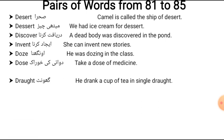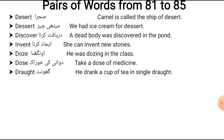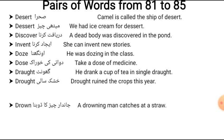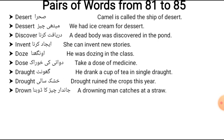Next pair: 'draught' and 'drought.' Draught means a gulp or sip — 'He drank a cup of tea in a single draught.' Drought means a dry spell or famine — 'Drought ruined the crops this year.' Ruined means destroyed, and crops means faslein.